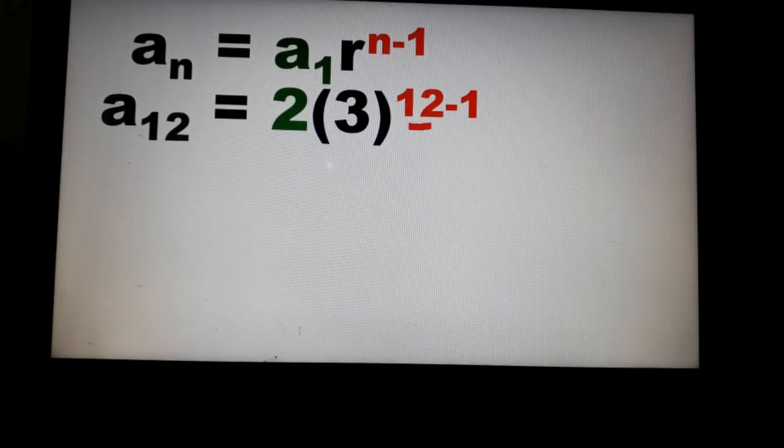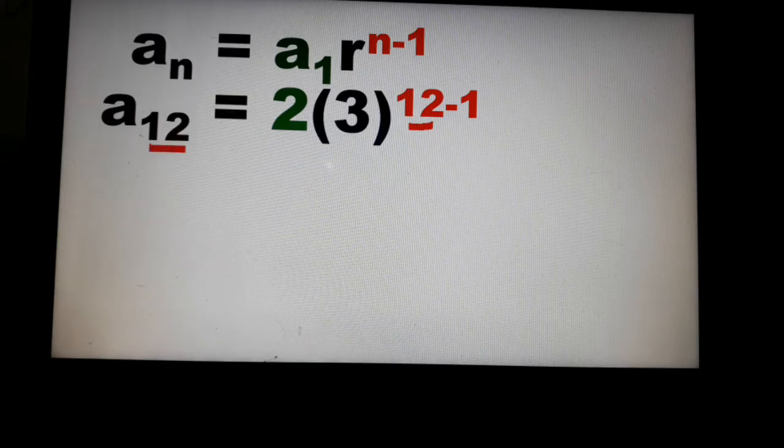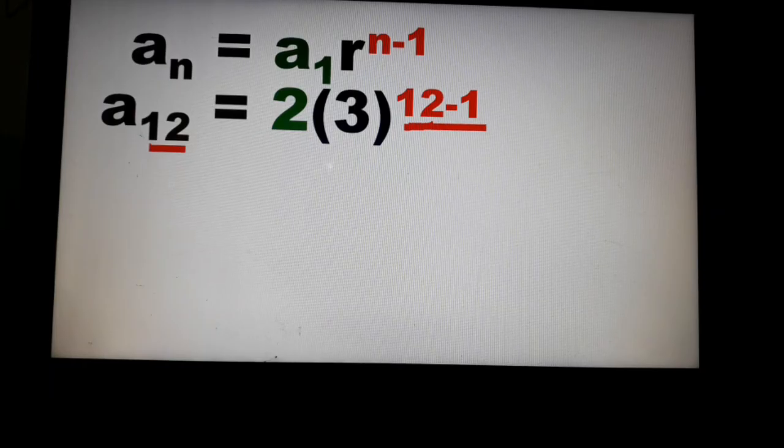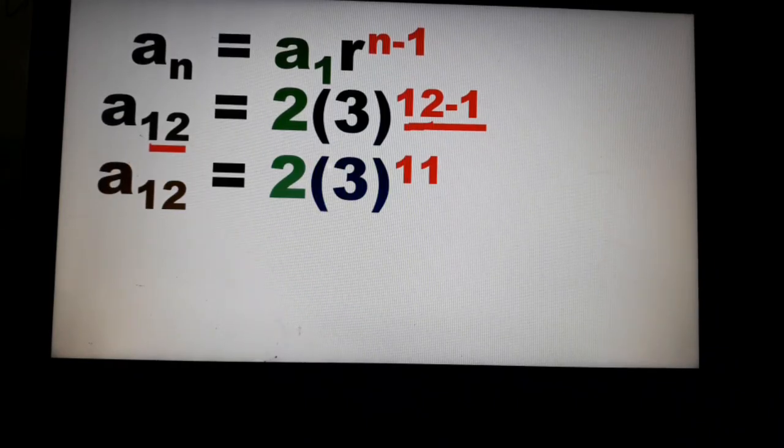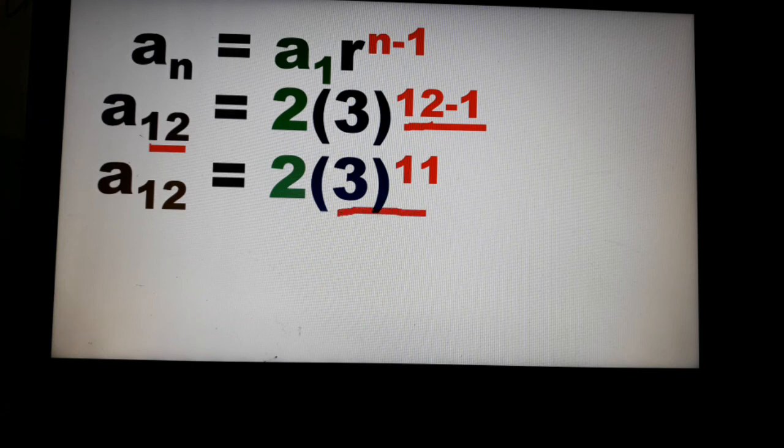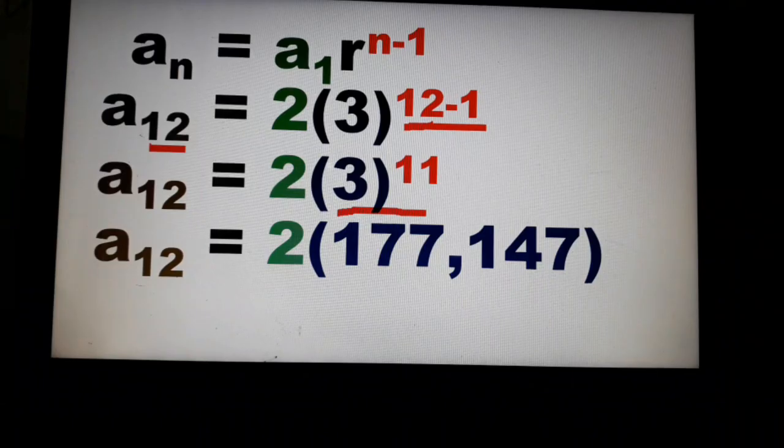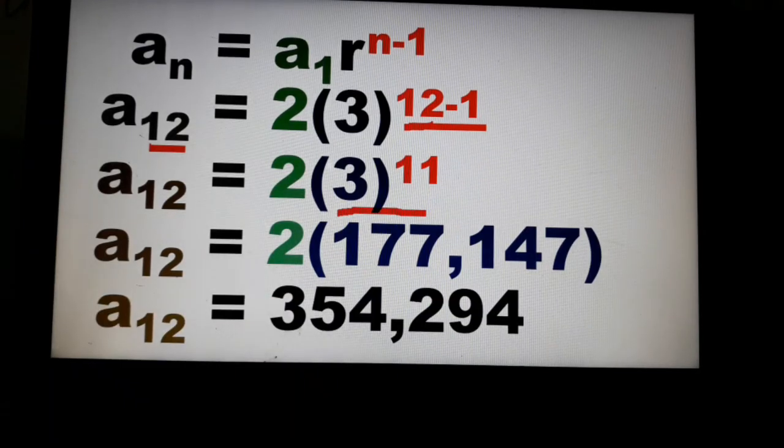So next step is, solve first the 12 minus 1, the exponent. So 12 minus 1 will give us 11. And then solve the parentheses, the 3 raised to 11, the exponent. So 3 raised to 11 will give us 177,147. And then multiply that by 2. So final answer is 354,294.